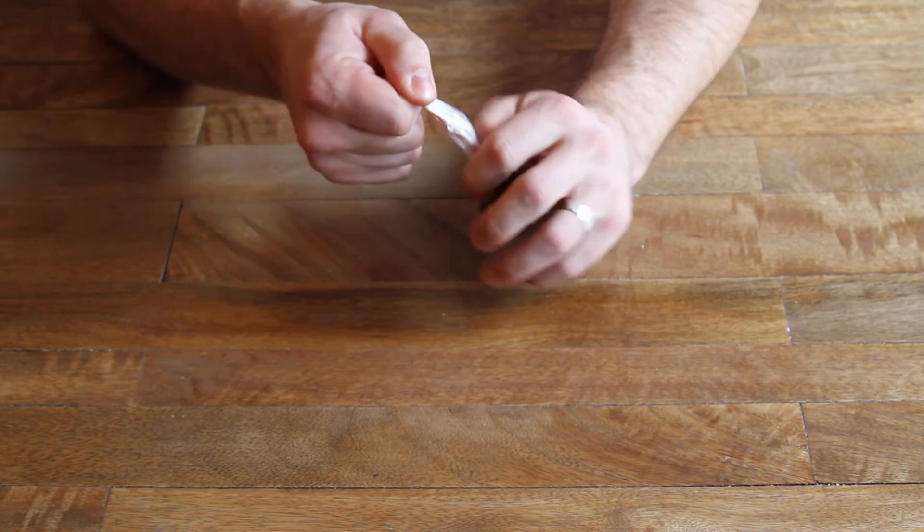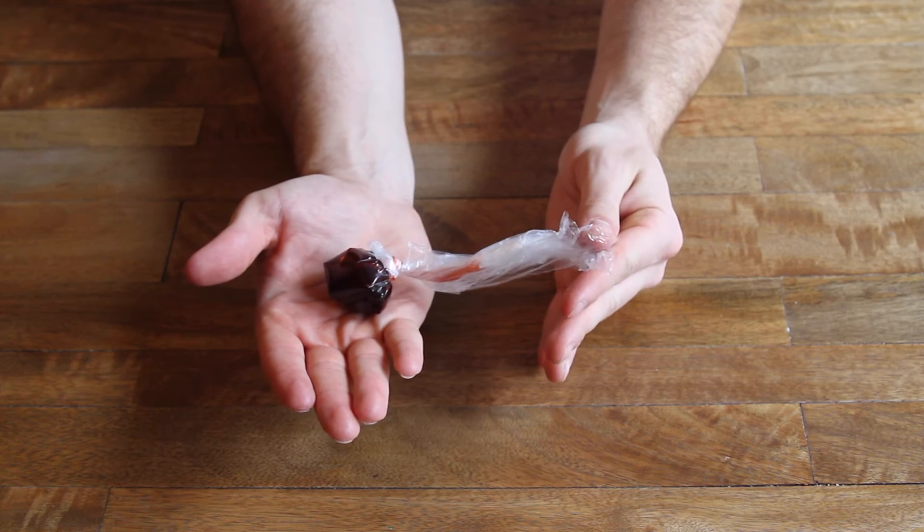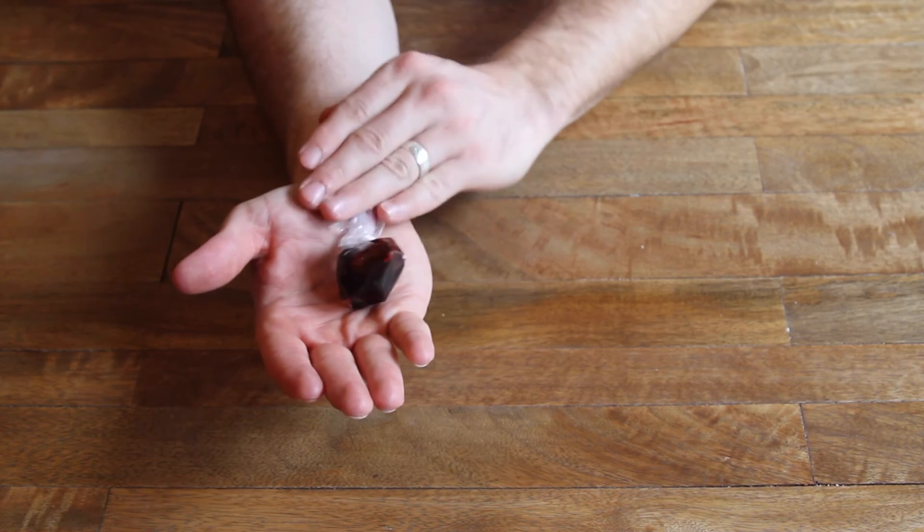Once you have that nice and pressurized to where you like it, your blood bag is ready to go. You can keep the tail, tape it to some surface, or you can cut the tail off and just have the cherry.